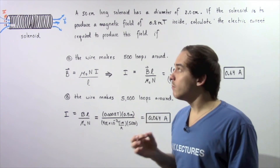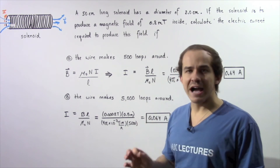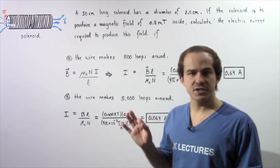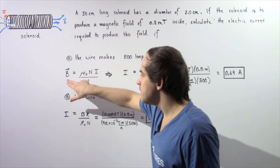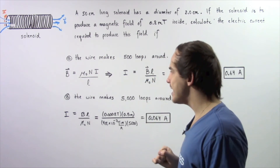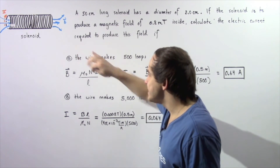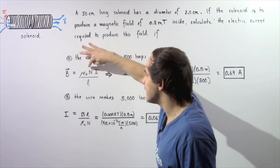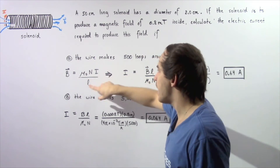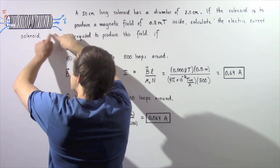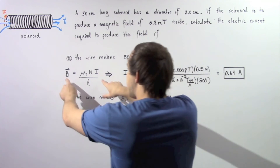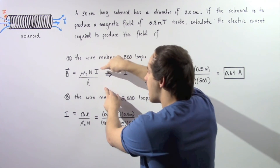For part A, the number of loops in our solenoid is 500. Recall from our previous lecture on solenoids that the magnetic field B at the center is given by: B equals mu naught times N times I divided by L, where mu naught is the permeability, N is the number of loops, I is the electric current, and L is the total length of the solenoid. We rearrange this equation and solve for I.